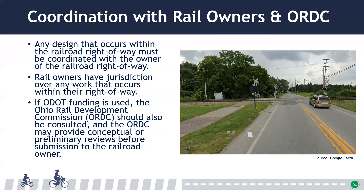It's important to remember that tracks that are not continuously within the roadway typically have independent right-of-way that supersedes the highway right-of-way at a crossing, and thus designers must coordinate with these owners. This chapter is intended to facilitate discussion with rail owners, but the rail owners ultimately have jurisdiction over any work that occurs within their right-of-way. The coordination process can take an extended period of time, so it's recommended that this coordination begin as early as possible so the design team and railroad owner can determine the preferred treatment and ensure that it can be accommodated within the anticipated project schedule and contract documents.